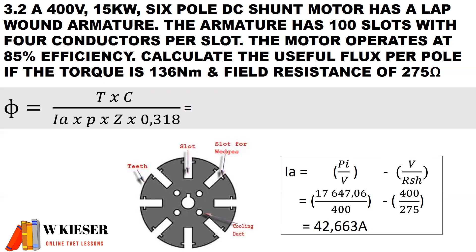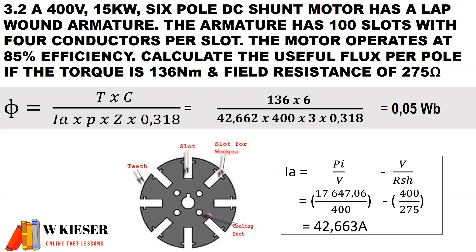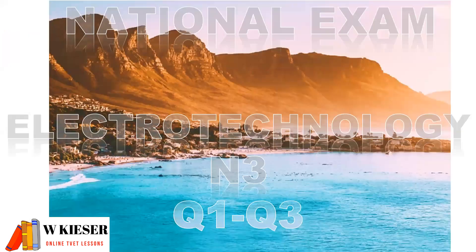Now we can substitute the values to determine the flux per pole. The torque is 136 newton meters. The number of parallel paths for a lap wound armature is 2 times 3, which gives us 6. The armature current is 42.662 amps. We have a six-pole machine, therefore there are three pairs. The total number of armature conductors is 100 multiplied by 4, giving us 400, multiplied by 0.318. The flux per pole is 0.05 Weber.